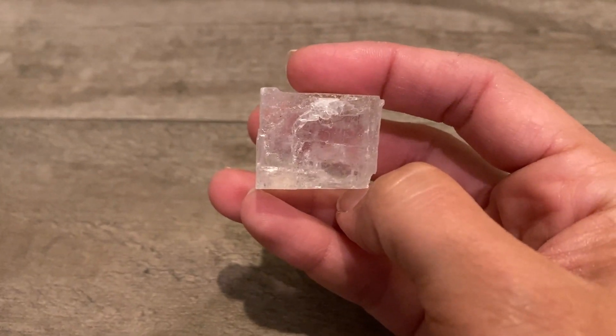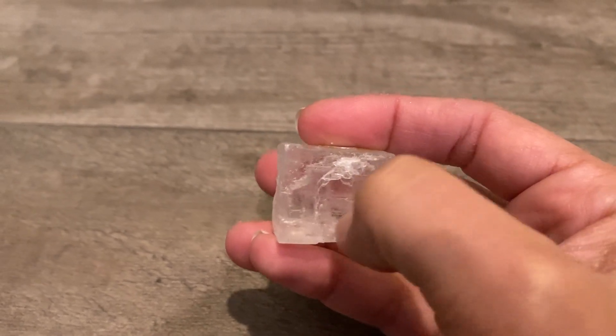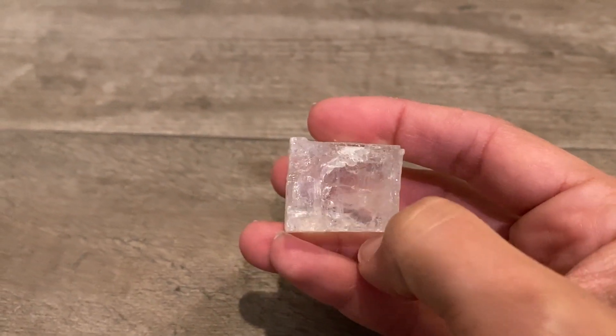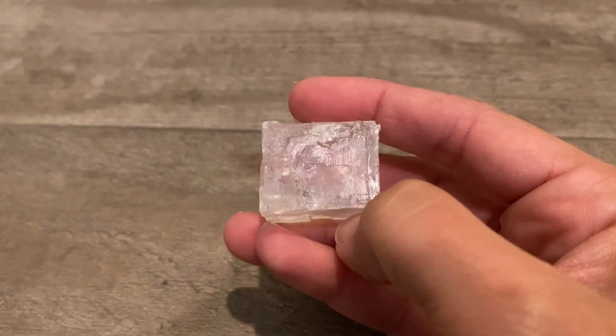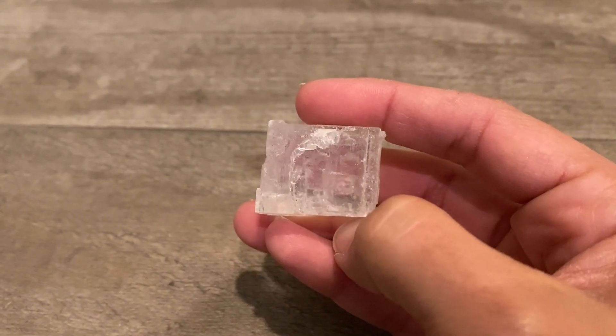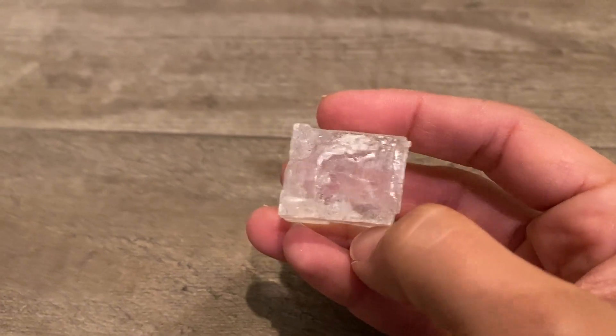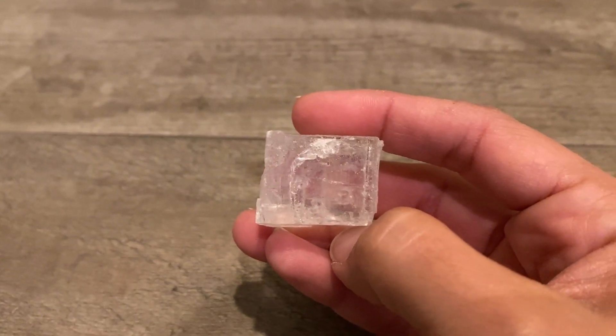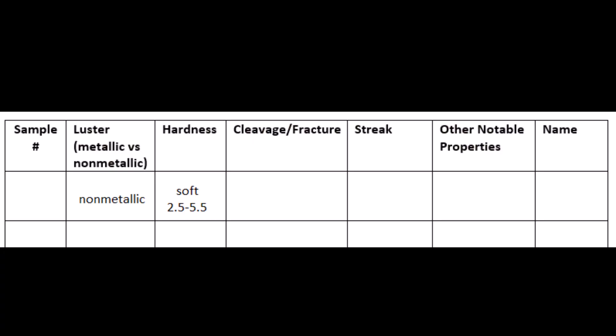Since it is a soft mineral, it is nice to see if it is softer than my fingernail, which has a hardness of 2.5. As I try to scratch this mineral with my fingernail, it does not scratch it, so it must be harder than or equal to my nail. These two hardness tests put this mineral somewhere from a 2.5 to 5.5 on the hardness scale.